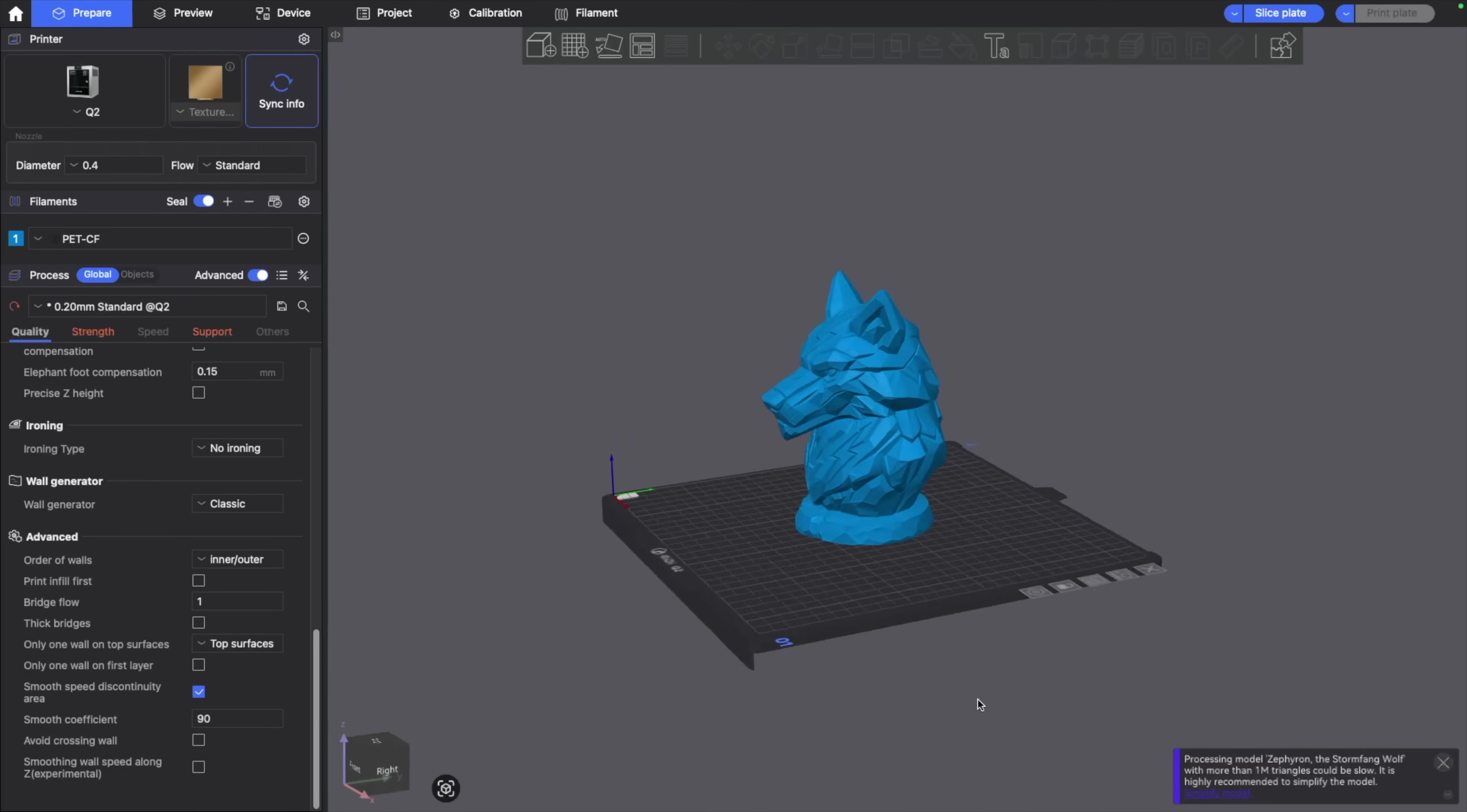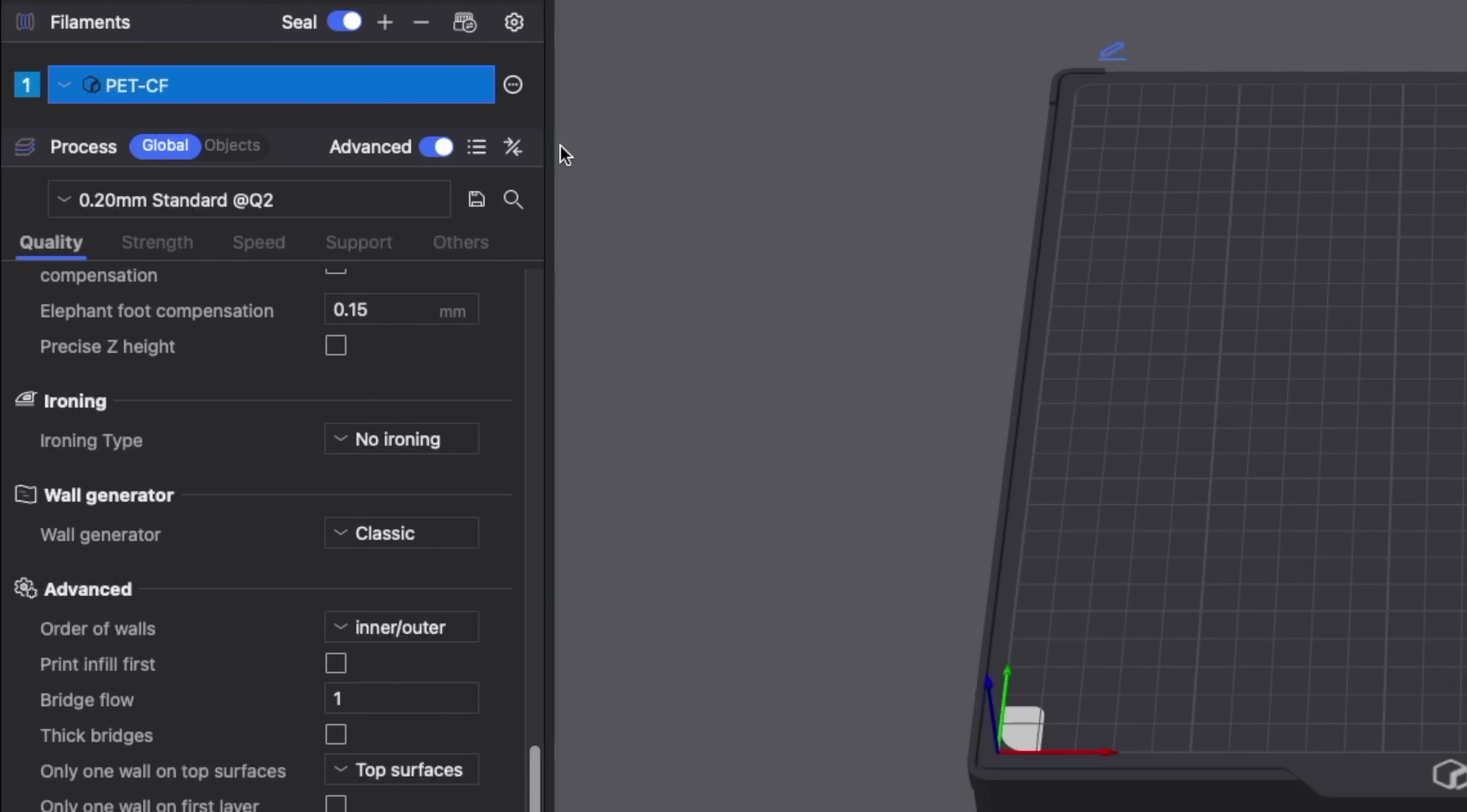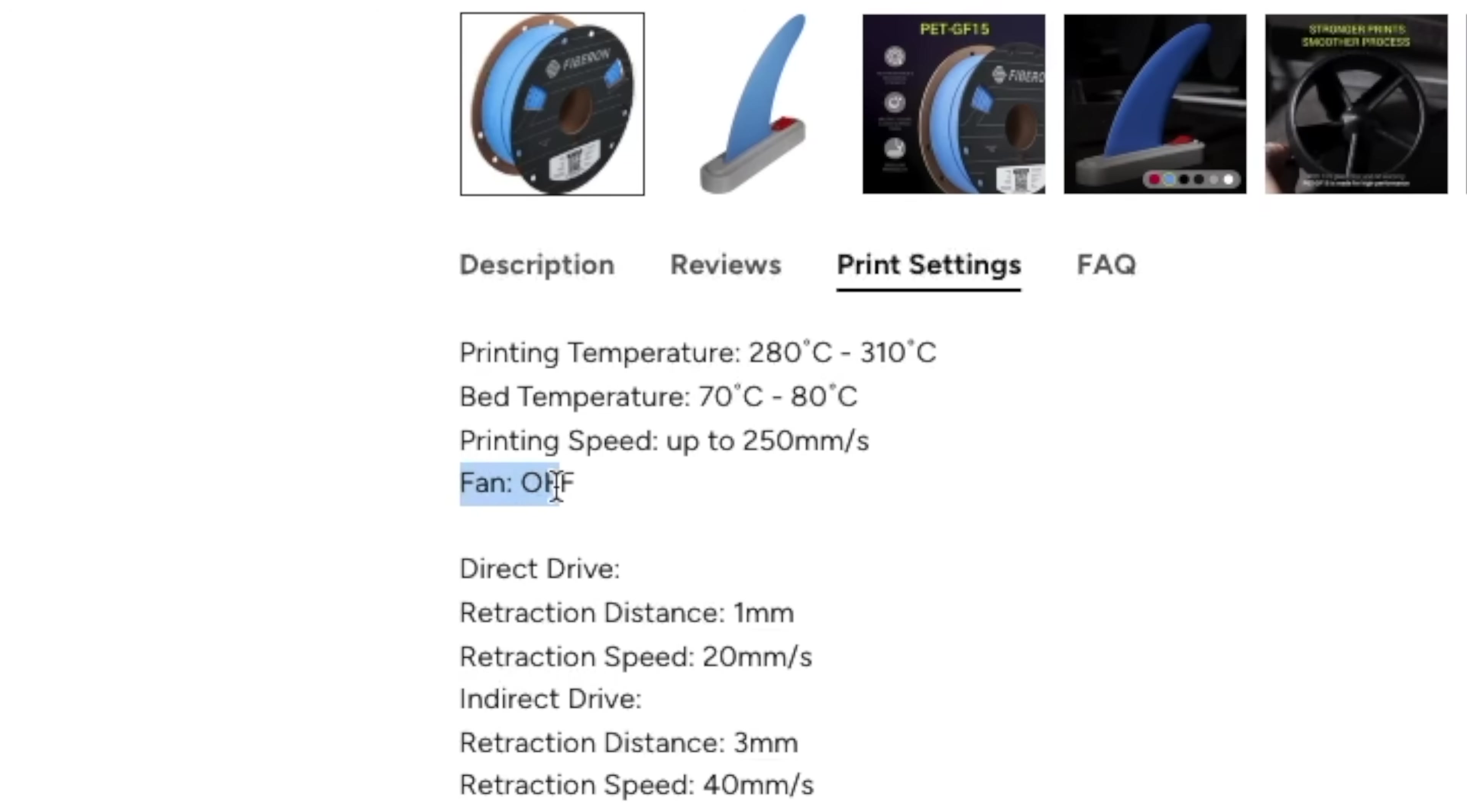Jumping over to the computer, I used Chidi Studio for all of my slicing, a forked version of Orcaslicer. Chidi actually had a built-in profile for PET-CF, which from my prior testing has near identical printing parameters to PET-GF, so I selected that and opened it up as my starting point. All the settings there were in the range recommended by Polymaker, so I figured I would give it a go and make adjustments as needed.